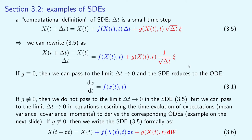However, we can still pass to the limit delta t goes to 0 in equations describing the time evolution of expectations — calculating the mean, variance, covariance, and other moments. In this way, we can derive the corresponding ordinary differential equations for these deterministic, predictable quantities. If g is not identically equal to 0, then we cannot formally write the derivative of x on the left-hand side, so we write the SDE formally in the standard form.